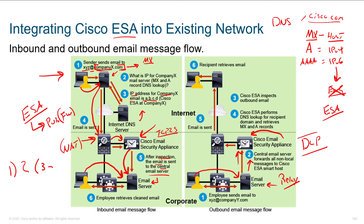The ESA applies all the rules you've configured. You can have different rules for different groups of users and departments. Assuming the email is to be delivered and wasn't dropped, the ESA does a DNS lookup for the mail exchanger of the target domain — resolves that address, connects on port 25, and performs the delivery. The receiving side could have a firewall or an ESA as well, but this is just looking at it from a single side.